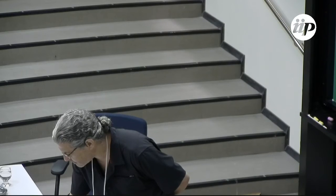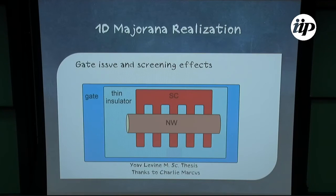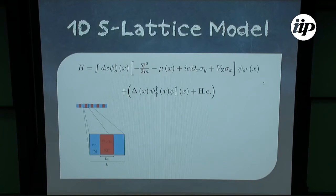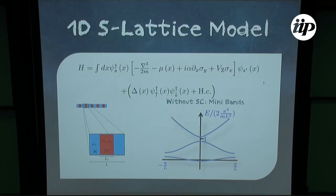Now I would like to describe in more detail how we did the calculations. Coming back to this model: the Hamiltonian is a phenomenological one where we allow both μ(x) and Δ to change in space. In the blue regions not covered by the superconductor, we have μ_N and Δ = 0. In the regions with the superconductor, we have μ_S and Δ_N. This is the basic Hamiltonian. Without superconductivity, we expect to have mini-bands because of the periodic structure — a gap opens at the edge of the Brillouin zone.